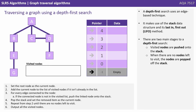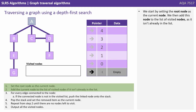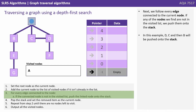A depth-first search uses an edge-based technique. It makes use of the stack data structure and its last-in, first-out method. There are two main stages to a depth-first search. Visited nodes are pushed onto the stack, and when there are no nodes left to visit, the nodes are popped off the stack. We start by setting the root node as the current node. We then add this node to the list of visited nodes, as it isn't already in the list. Next, we follow every edge connected to the current node. If any of the nodes we find are not in the visited list, we push them onto the stack. In this example, D, C, and B will be pushed onto the stack.